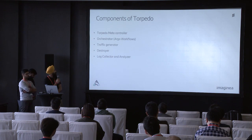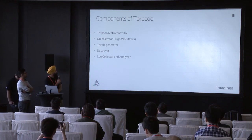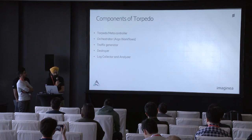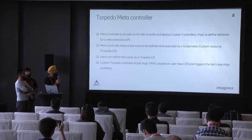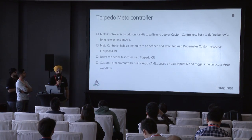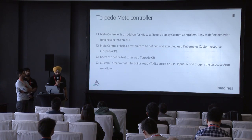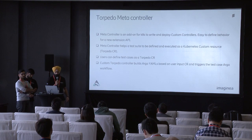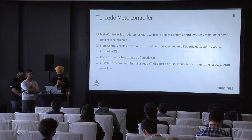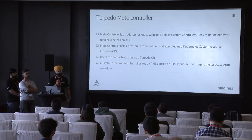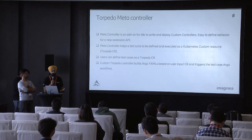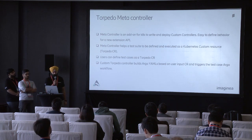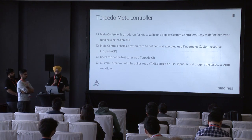The basic components are: Torpedo MetaController, Orchestrator, ArgoWorkflows, Traffic Generator, Destroyer, and Log Collector and Analyzer. MetaController is a Kubernetes add-on for writing and deploying custom controllers. Users can define their own test cases, and the custom Torpedo controller builds Argo YAMLs based on the inputs provided as job parameters. MetaController passes these to ArgoWorkflow.